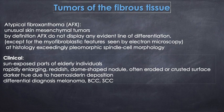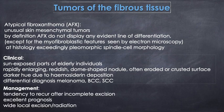From a clinical point of view, this is a tumor of the sun-exposed parts and of elderly individuals. Usually it appears as a rapidly enlarging, reddish dome-shaped nodule, often eroded, ulcerated with a crusted surface. This tumor has a tendency to recur after incomplete excision but with an excellent prognosis. Wide local excision is recommended.